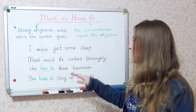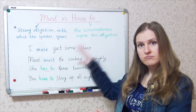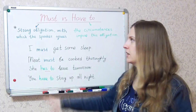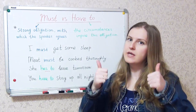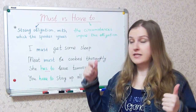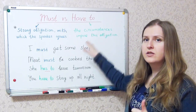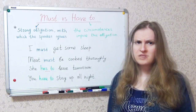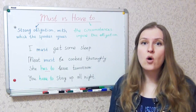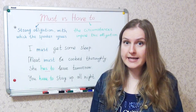So mostly it is all about the attitude. With must, you agree, you think it is right — yes, I must do it — and the obligation is very strong. With have to, you do not think so. You might be against it, but you have no other choice. You are cornered into doing it.